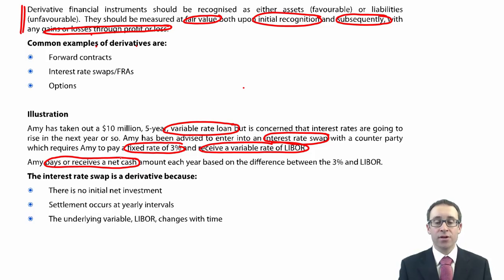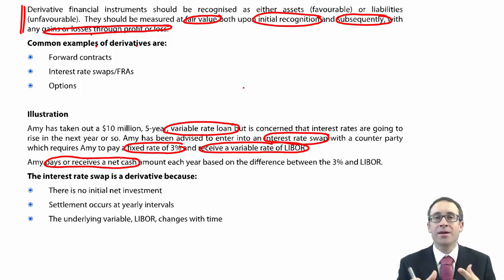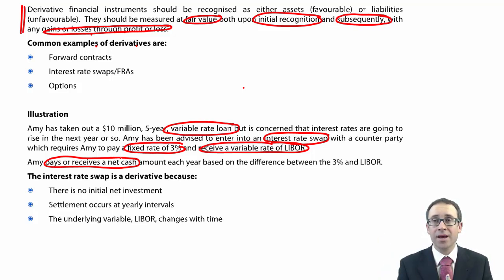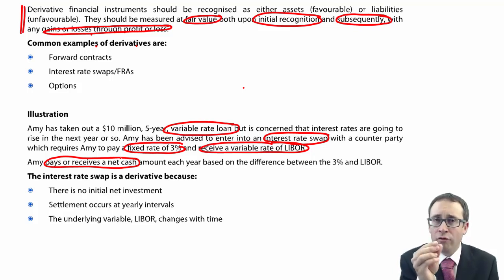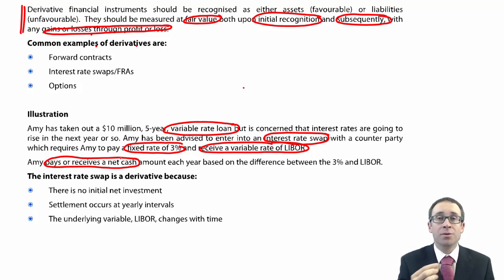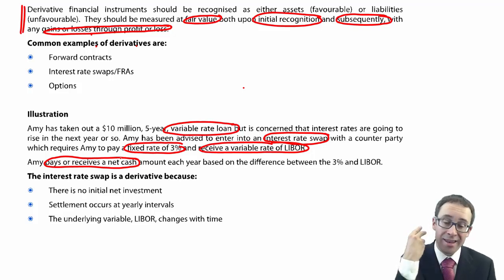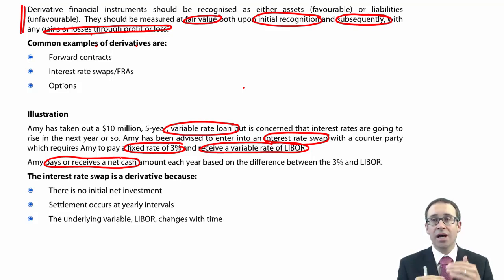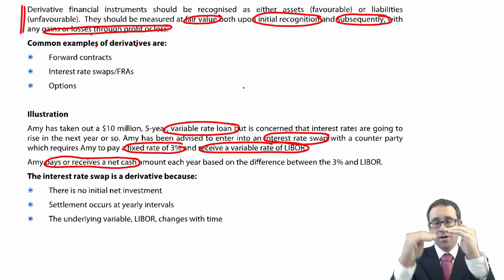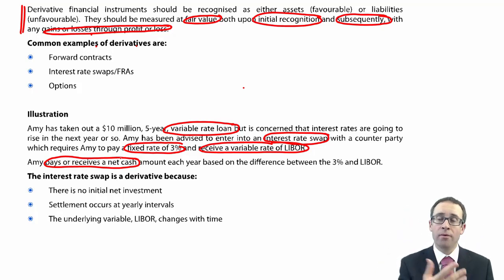Settlement occurs at yearly intervals, where you make the net interest payments every year. There's no initial investment — you approach a bank or intermediary who arranges the swap with a counterparty. You may pay a small fee, but based on the $10 million borrowings it's negligible. So it satisfies the three criteria: no or very small initial net investment, settled at some point in the future, and the value of the swap changes over time as the variable rate goes up or down — making the swap arrangement either favourable or unfavourable.